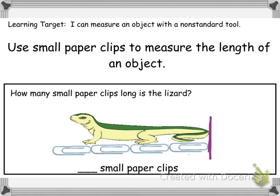I'm going to start from this side with the tail and count how many paper clips it takes to show how long the lizard is. There's one, two, three — and let's see how much it uses. This one uses most of it, so I'm going to say it's four small paper clips long. Sometimes it's a little bit difficult to figure out if it's three or four.